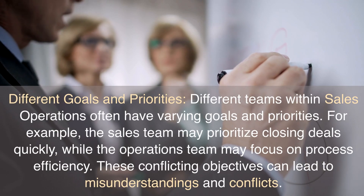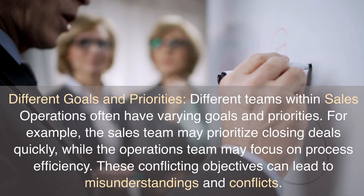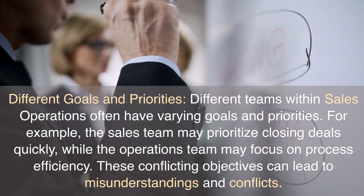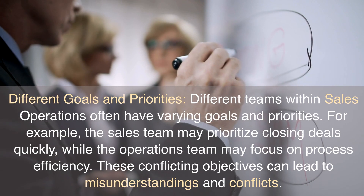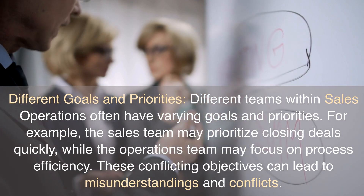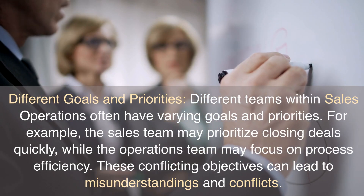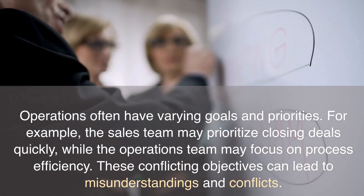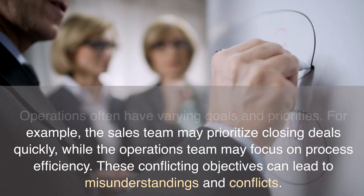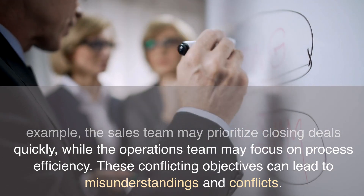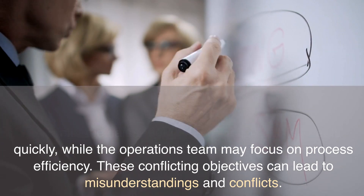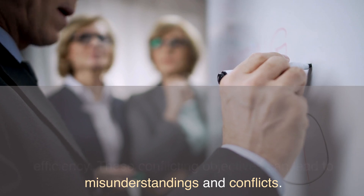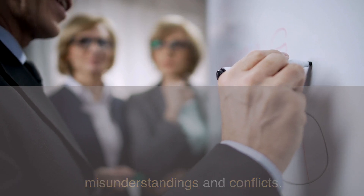Different goals and priorities. Different teams within sales operations often have varying goals and priorities. For example, the sales team may prioritize closing deals quickly, while the operations team may focus on process efficiency. These conflicting objectives can lead to misunderstandings and conflicts.